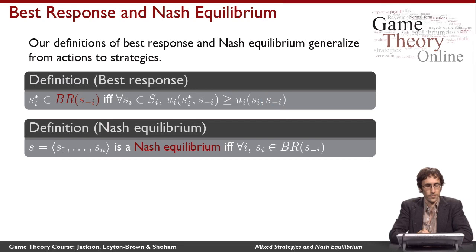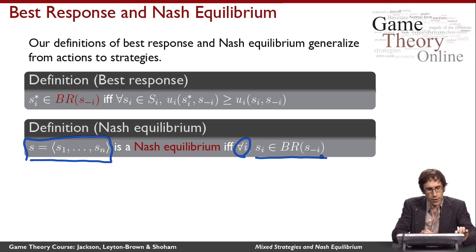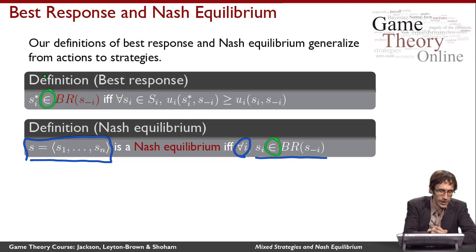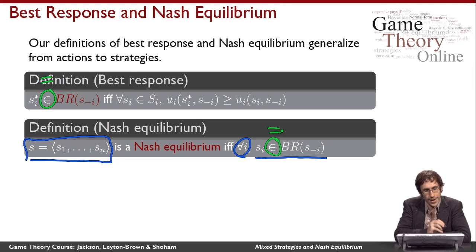A strategy profile S is a Nash equilibrium if for all agents, everybody is playing a best response. Notice I use a set membership operator rather than an equal sign, because the set of best responses might have more than one element — there might be multiple best responses. So a strategy profile is a Nash equilibrium if everybody is playing one of their best responses.